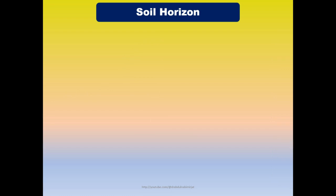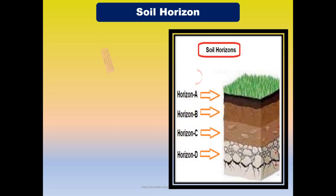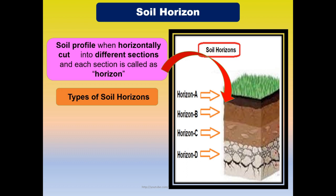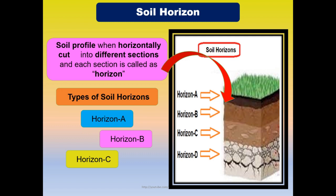Now, soil horizon — what is a soil horizon? When the soil profile is horizontally cut into different sections, each section is called a horizon. Soil horizons can be classified into different types such as horizon A, horizon B, horizon C, and horizon D. Horizon A can further be classified into A1 and A2, but in this introductory lecture we have discussed only the major types: A, B, C, and D.